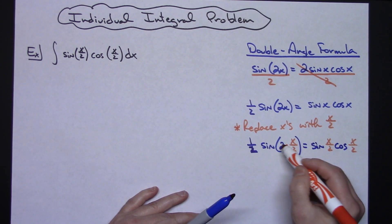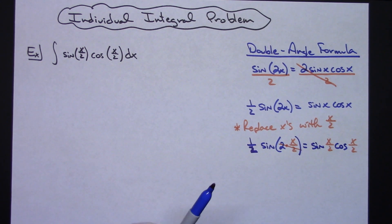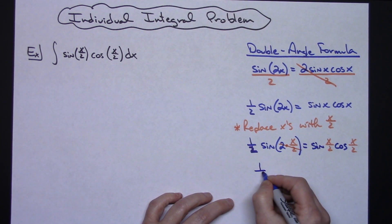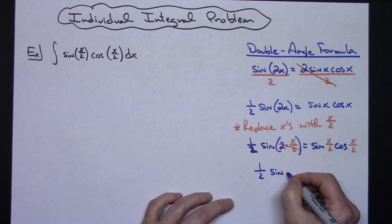Alright now we're going to do a little bit of simplifying right here, so those 2's are going to cancel away. The left hand side is going to be (1/2)sin(x).